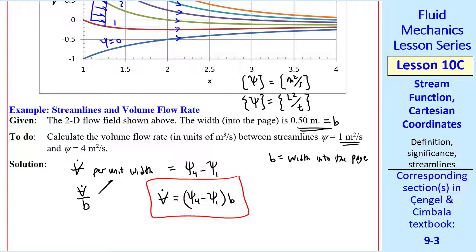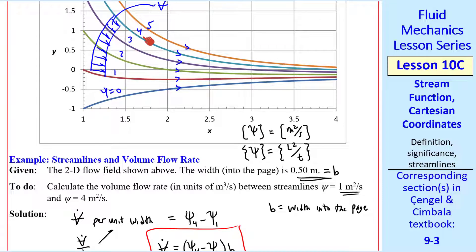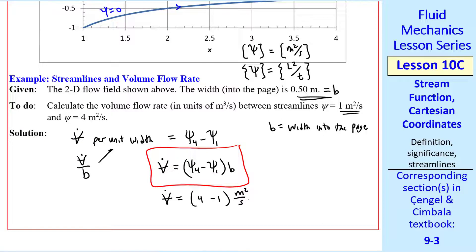This is our answer in variables and we plug in the numbers in this case psi is 4 along streamline 4 and psi is 1 along streamline 1 in this plot and their units are meter squared per second and then B is 0.50 meters. So our final answer is that V dot is 1.5 cubic meters per second.